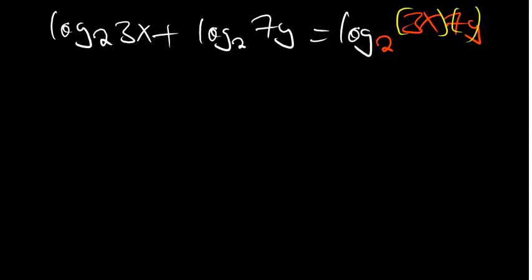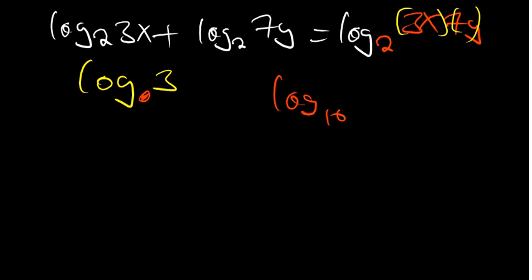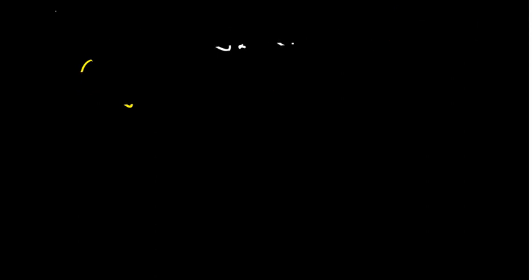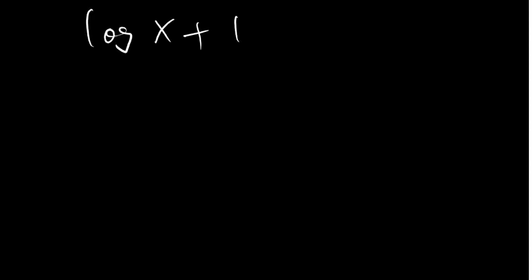Any log written without a base — for example, log of 3 — is understood to be log base 10. So if we have log x plus log 7y with no base shown, we know it's base 10, and since it's addition, we condense to log(x · 7y).